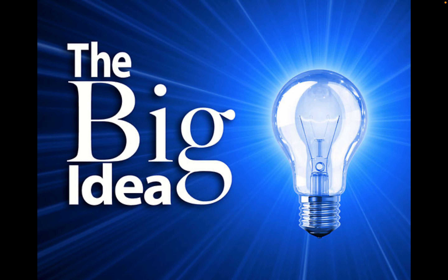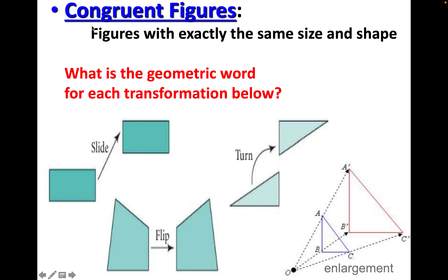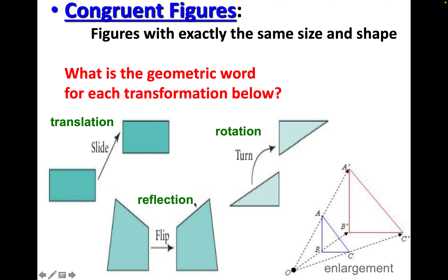Now let's talk about the big idea about congruent triangles. Congruent figures are figures with exactly the same size and shape. To show that two figures are congruent, we often have to move, slide, or flip them. The geometric word for slide is translation, the word for turn is rotation, and the word for flip is reflection. And when we see an enlargement, it's called a dilation.